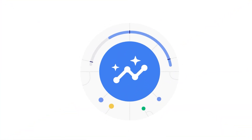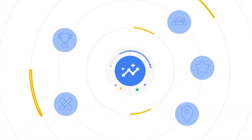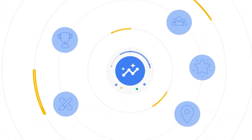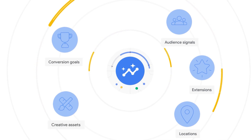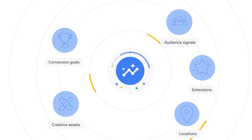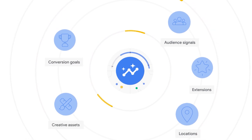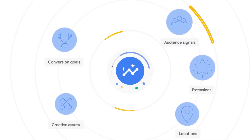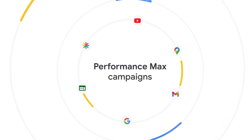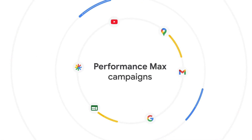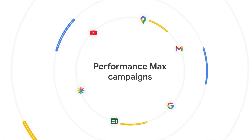Performance Max combines your goals and inputs with the power of automation to help you respond to dynamic shifts in consumer demand in real-time. This allows you to invest where new conversion opportunities are, no matter which channel they're on.